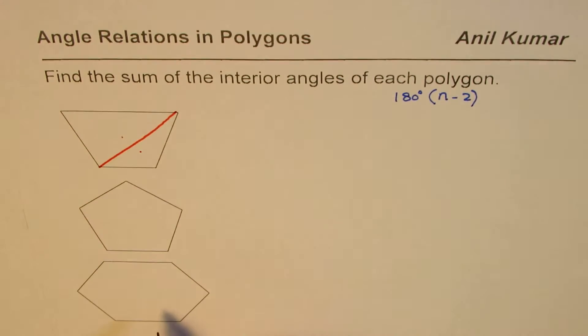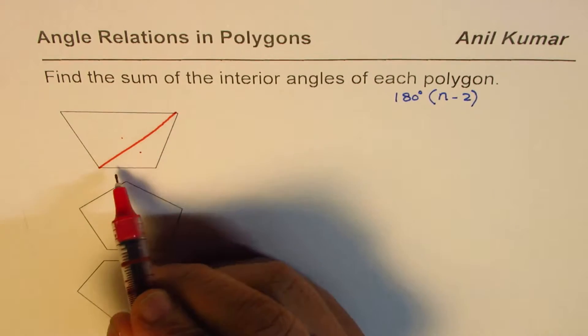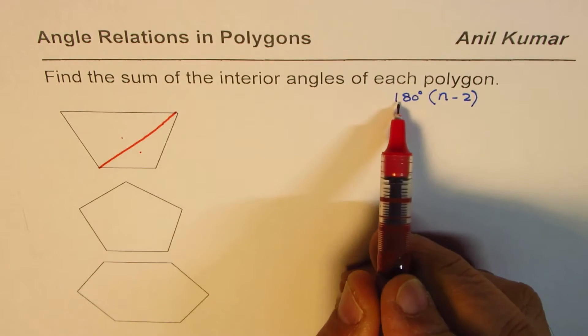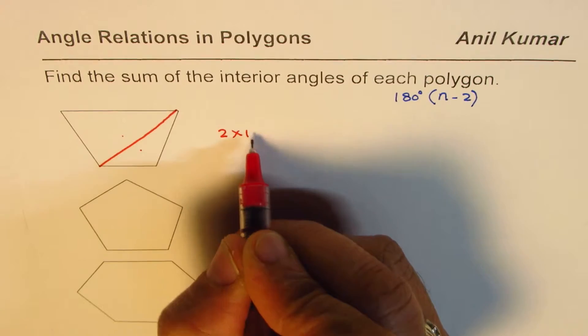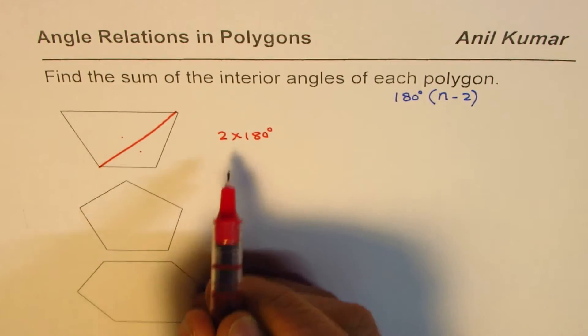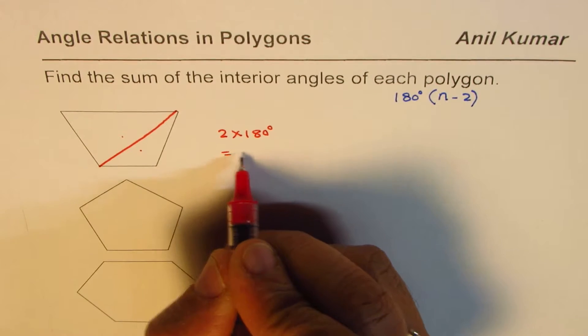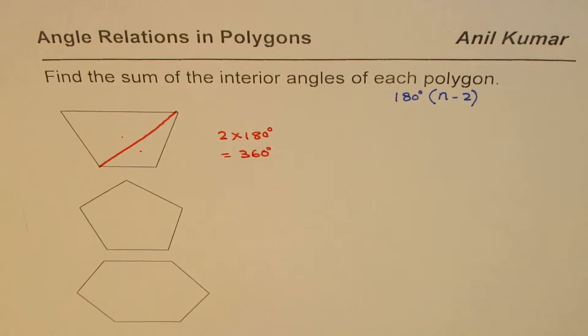Each triangle has a sum of interior angles of 180 degrees. So two triangles will have 2 times 180 degrees. We get the sum which equals 360 degrees. That is one way of finding it.